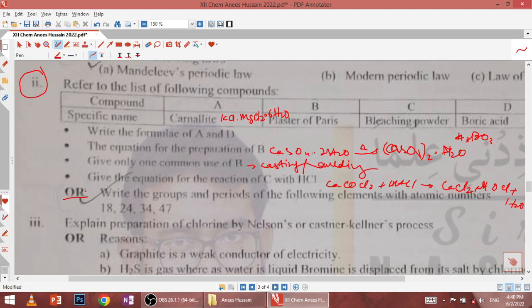Next, write the group and period of the following elements. Atomic number 19 is potassium, group 1, period 4. Atomic number 24 is chromium, group 6, period 4. Z equal to 34 is selenium, group 6, period 4. Atomic number 47 is silver, group 1B, period 5.